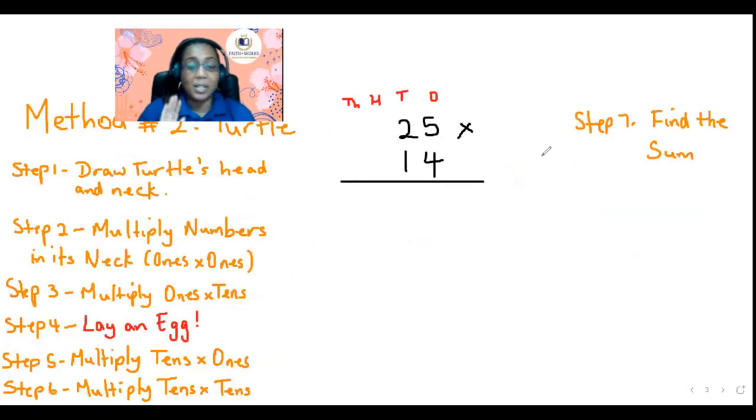So this is for the artistic ones out there who like to draw and color and paint and whatnot. So this is called the turtle method. Let's look at step number one. Step number one, we draw the turtle's head and neck. Now I'm not the best artist, but we can get an idea, right? It looks kind of weird, but that's the turtle. He's smiling, trying to make him smiley. That's his head and his neck. So let's get to step number two.